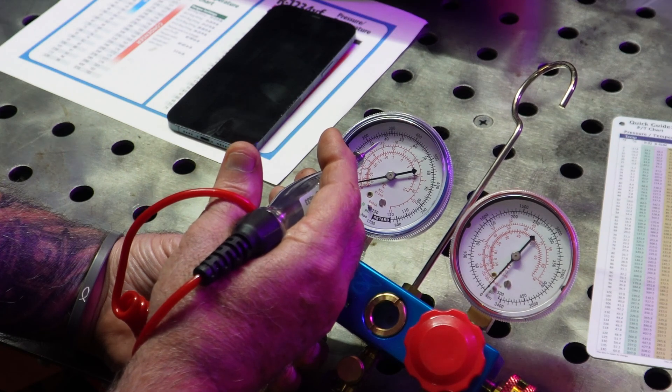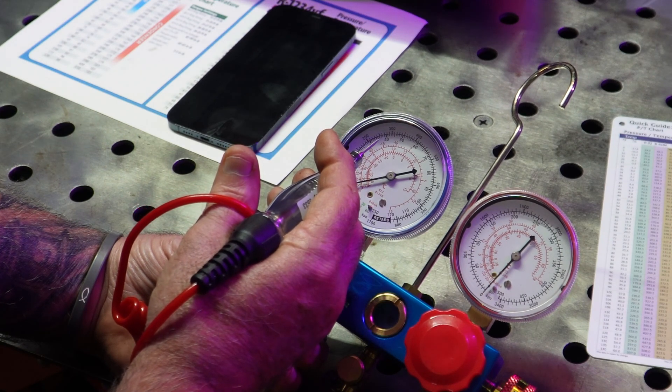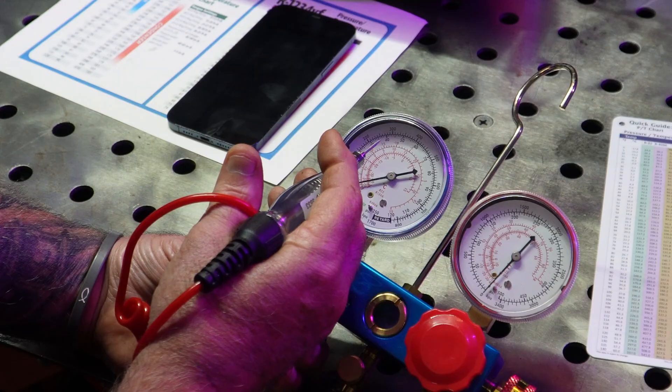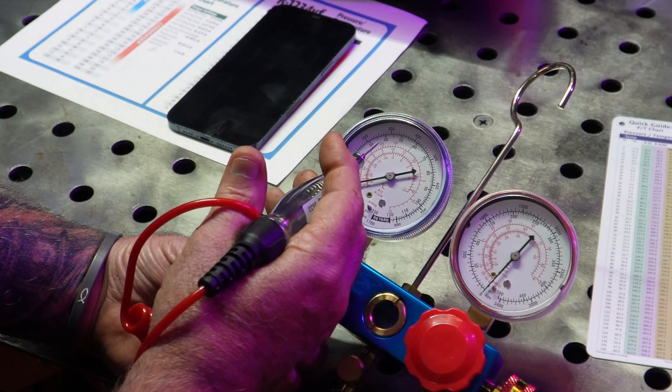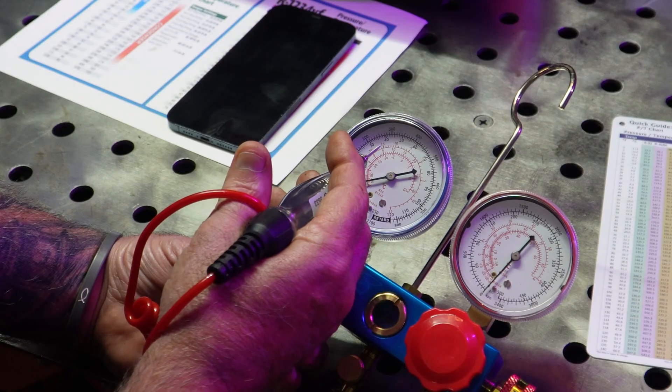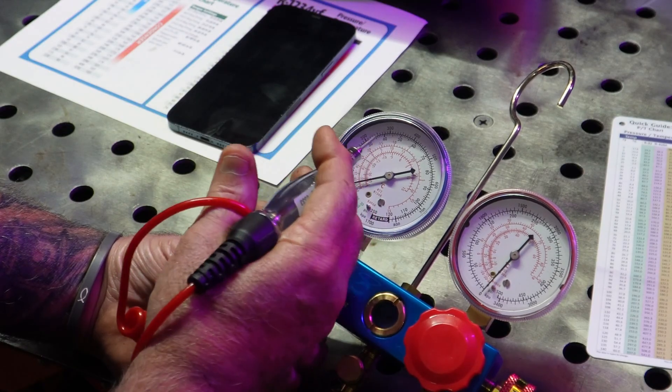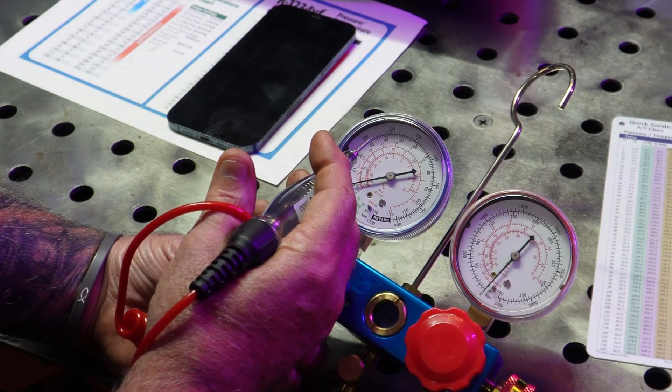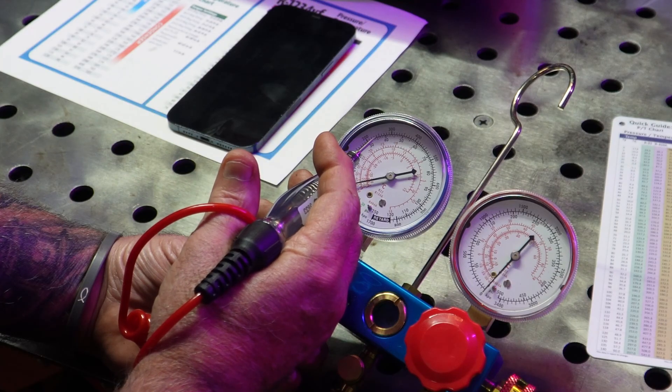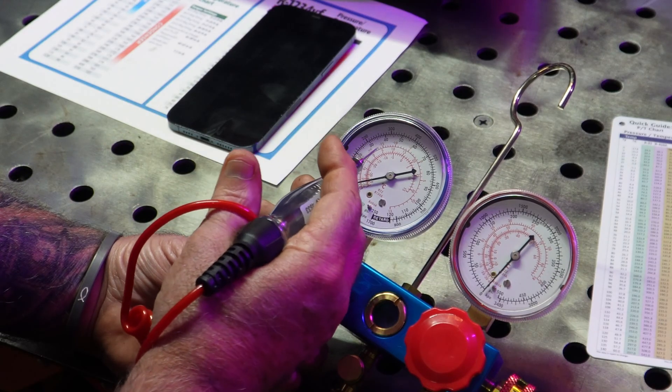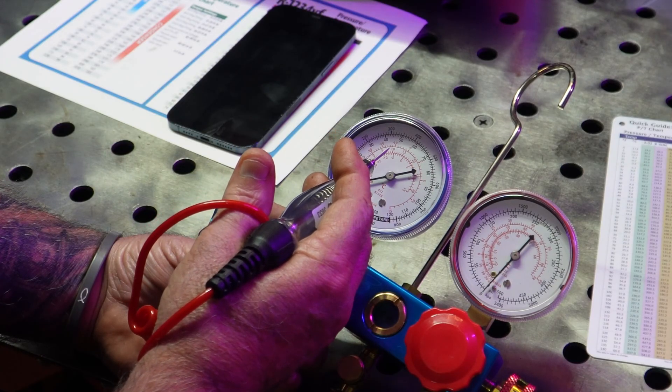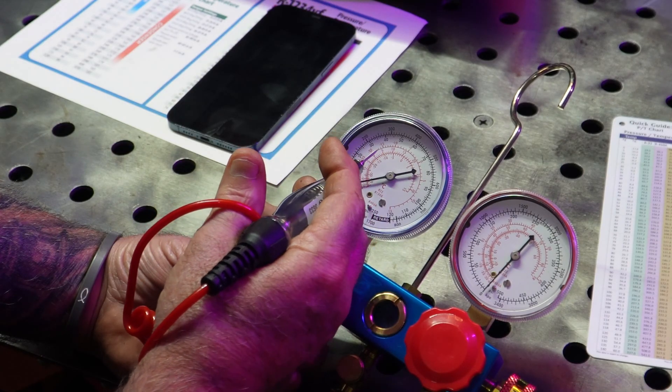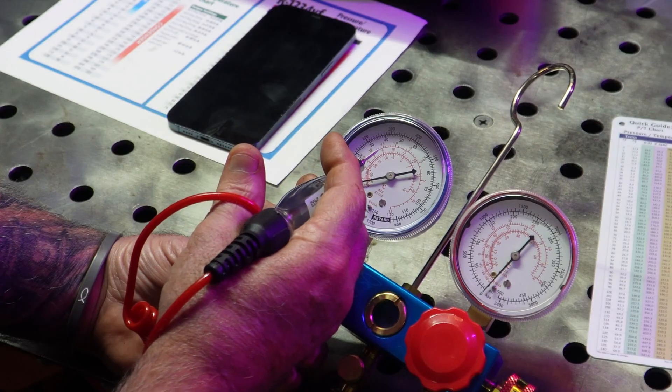That is at the very point where the warm liquid coming from the condenser goes through the metering device, whether it be expansion valve or orifice tube, and on a residential unit it would be either expansion valve, piston, or capillary system. It's where that liquid turns into or boils off into a vapor, and that's the actual temperature that is boiling off at 41 degrees at that pressure.